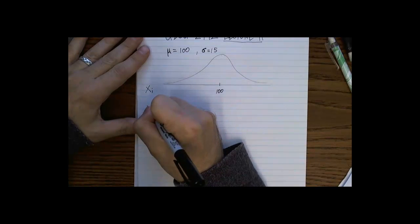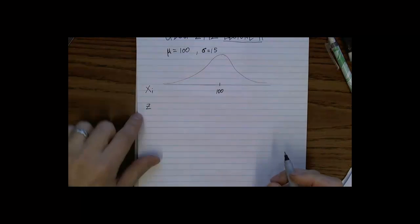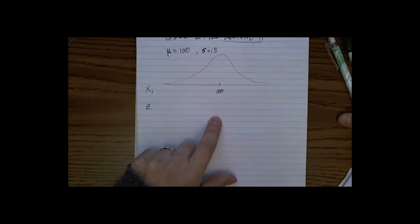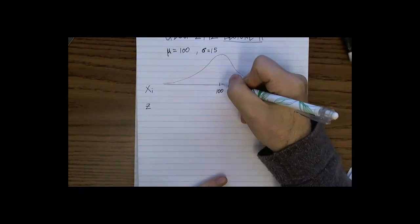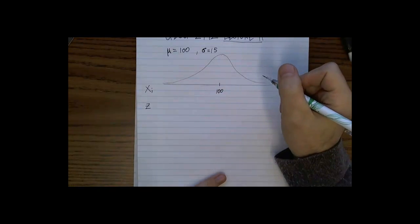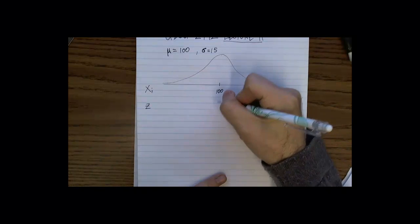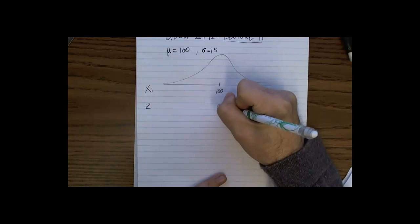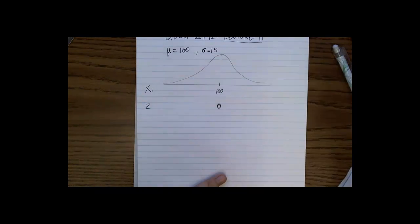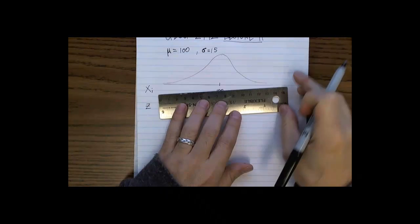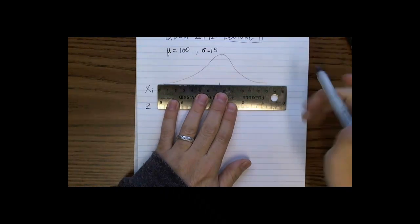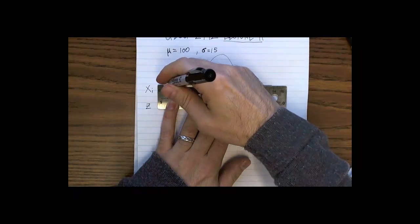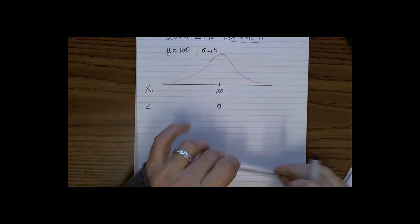And what else do we know? So we could also think of this mean in terms of a z-score. So we have a mean of 100, which would also, in terms of a z-score, is in the middle of the distribution. So that would be a zero.